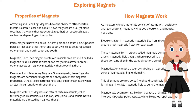Poles: magnets have two poles, a north pole and a south pole. Opposite poles attract each other — north and south — while like poles repel each other — north and north, south and south.